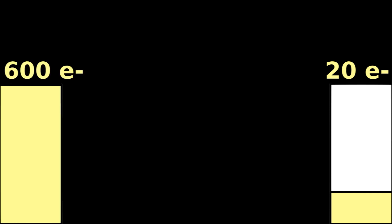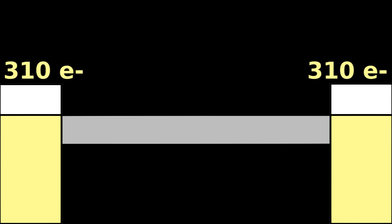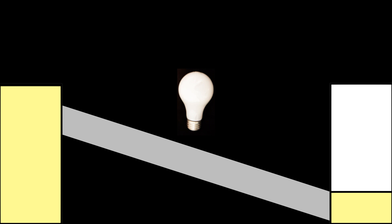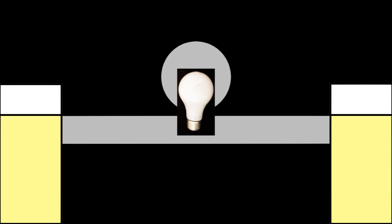If you connect the two sides with a wire, the electrons will flow down the gradient until each side is equal at 310 electrons. You can also put a light bulb in the wire, so as the electrons flow through the bulb, it gives off light.